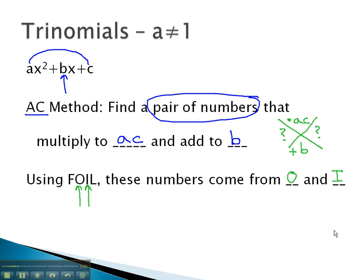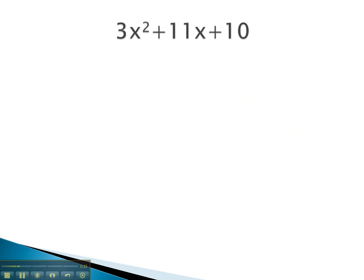Let's take a look at an example where we can see this worked out. In this problem, in order to factor it, we set up our cross and put what we want to multiply to on the top, which is ac. 3 times 10 is 30.